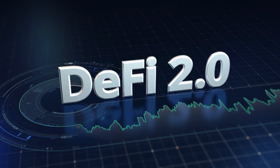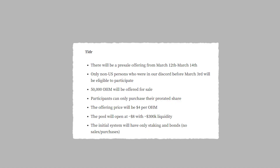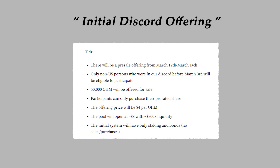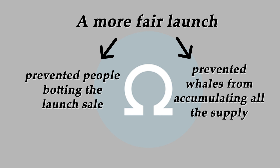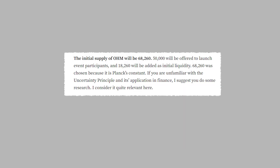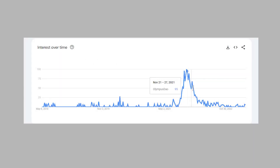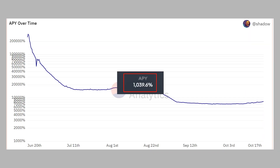To get a better understanding of this protocol, it is also useful to explore some of its history and understand what sort of role it has played in the DeFi space. The protocol launched in March of 2021 in an initial Discord offering. This basically meant that users who had participated in the Olympus DAO Discord before a predetermined date were eligible to participate in the launch sale. This was done in order to encourage a more fair launch that saw active and participating users given an equal chance at early tokens. The initial supply distributed was 68,260.